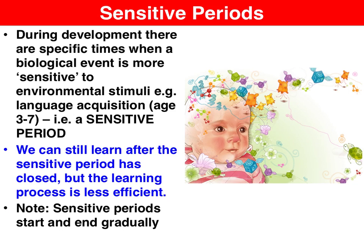Sensitive periods of learning can be described as specific times during our development when a biological event is more sensitive to environmental stimuli. For instance, our brains are most sensitive to exposure to language between the ages of three and seven. After the sensitive period has closed, we can still learn, but the learning process is less efficient. For example, if we grow up not exposed to language until adolescence, we can still learn language — it's just that the process will be less efficient.